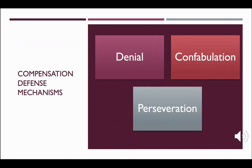Individuals may use defense mechanisms to compensate when experiencing cognitive changes. Both the individual and family members can refuse to believe changes are occurring, even when obvious to others. If asked a question they can't remember, they may make up stories — this is called confabulation, an unconscious attempt to preserve self-esteem. Perseveration is when an individual avoids answering and instead repeats phrases or behaviors, also an unconscious attempt to maintain self-esteem when memory has failed.